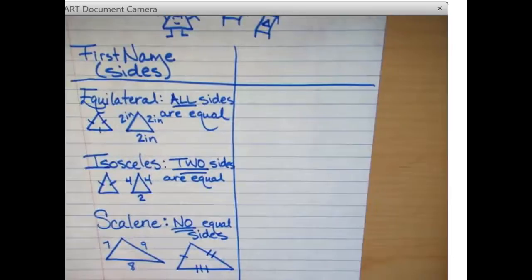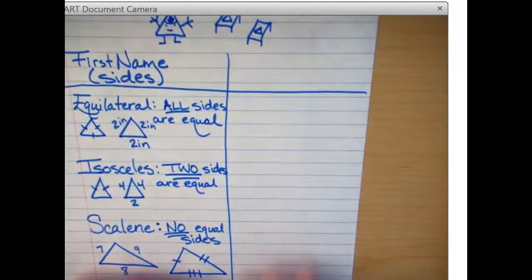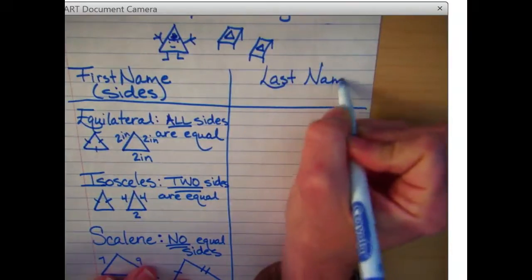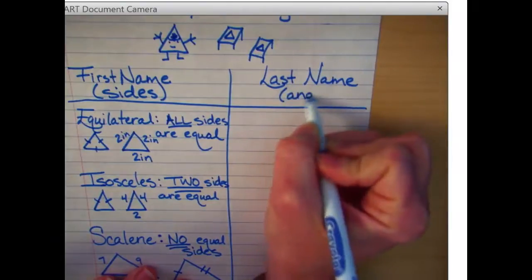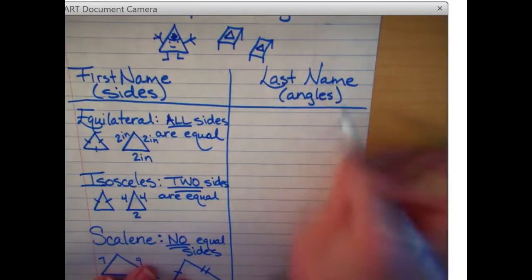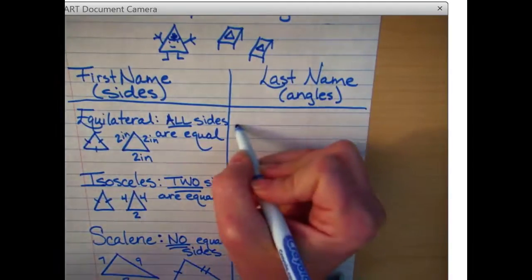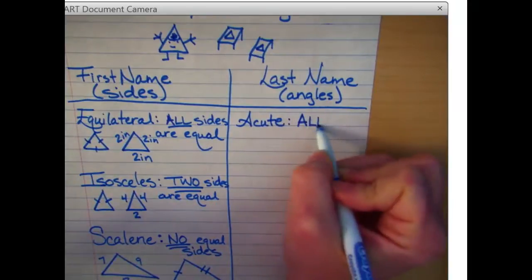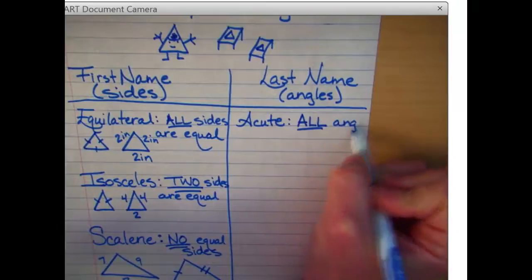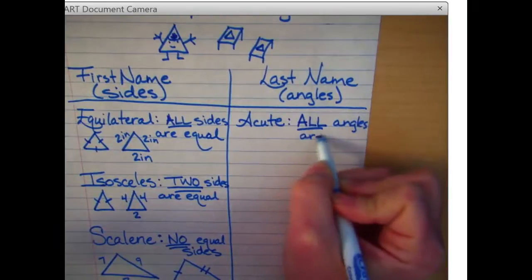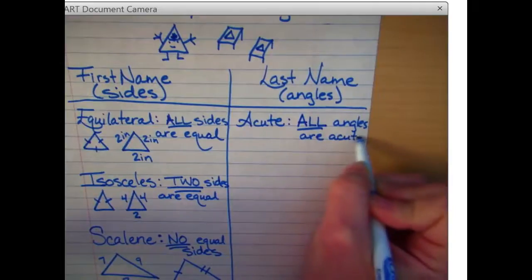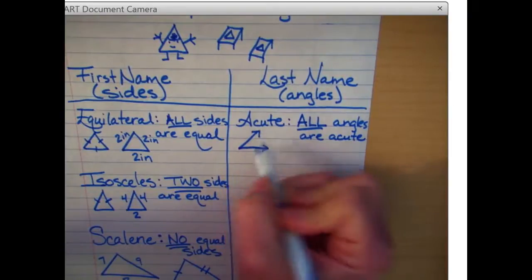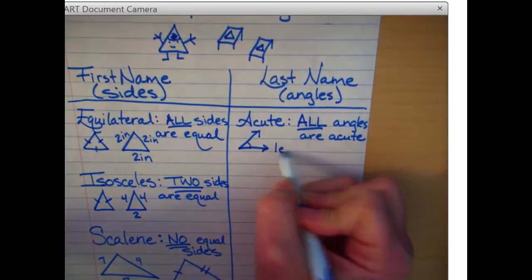Now the last names are a little bit easier because these are words you've seen since third grade. Their last name is given to them because of their angles. The last name is acute if all angles are acute. And just to review, an acute angle is less than 90 degrees. These are the small guys. Acute is less than 90 degrees.